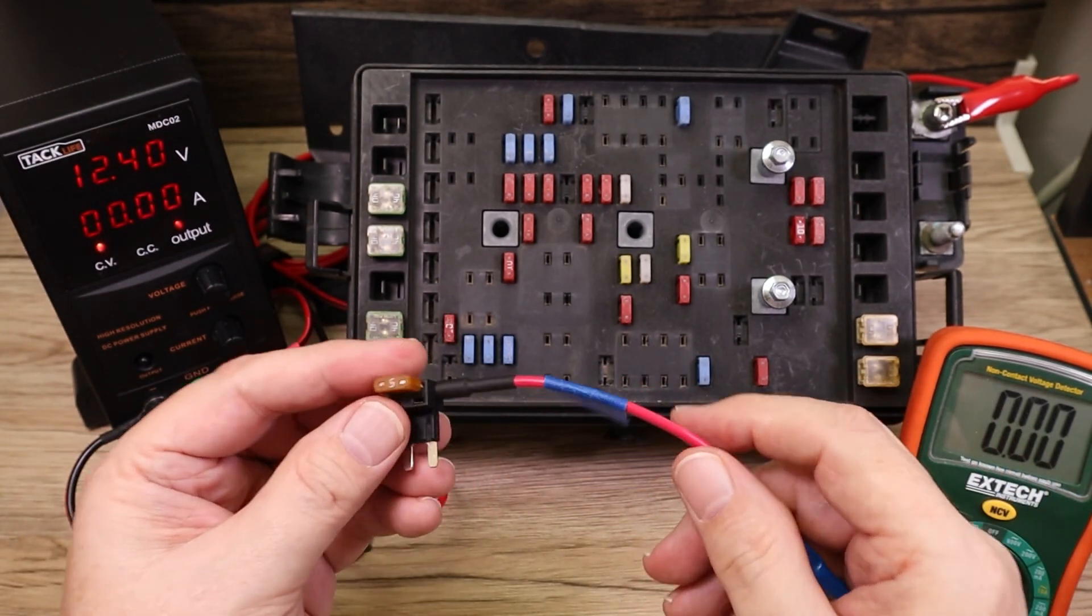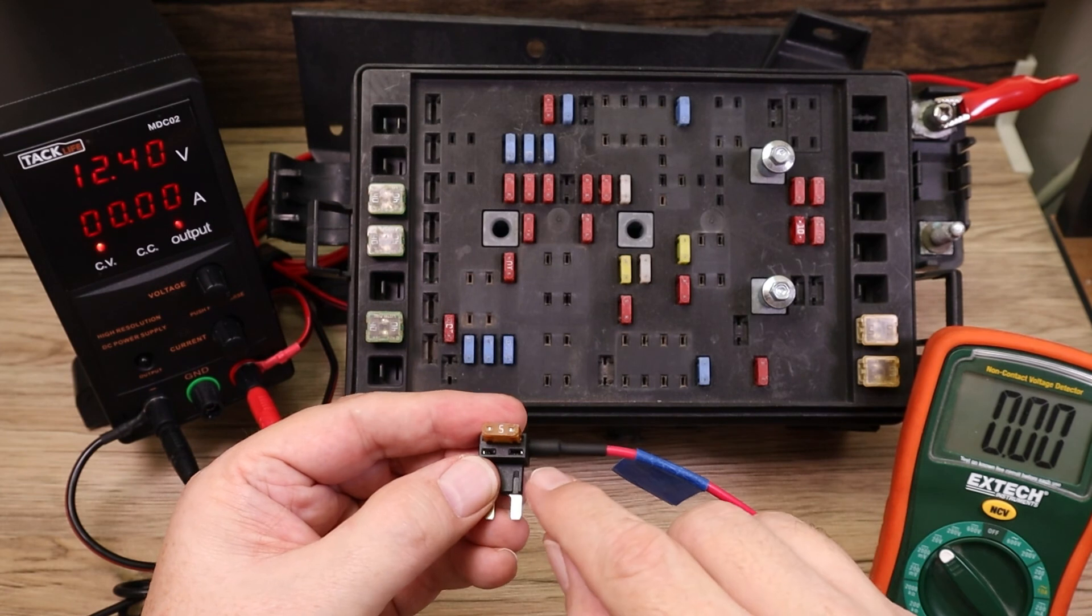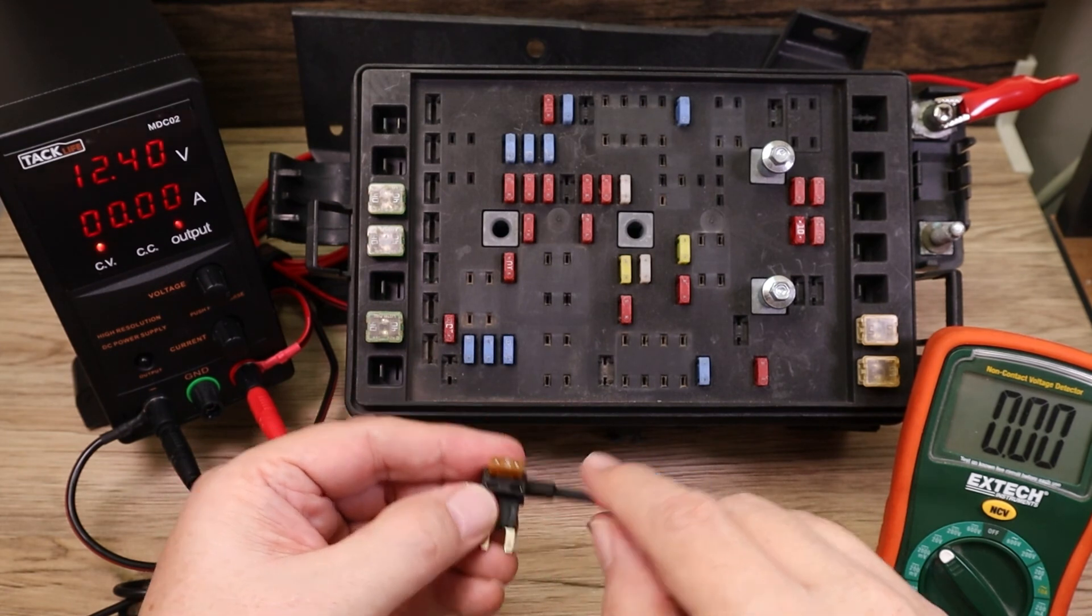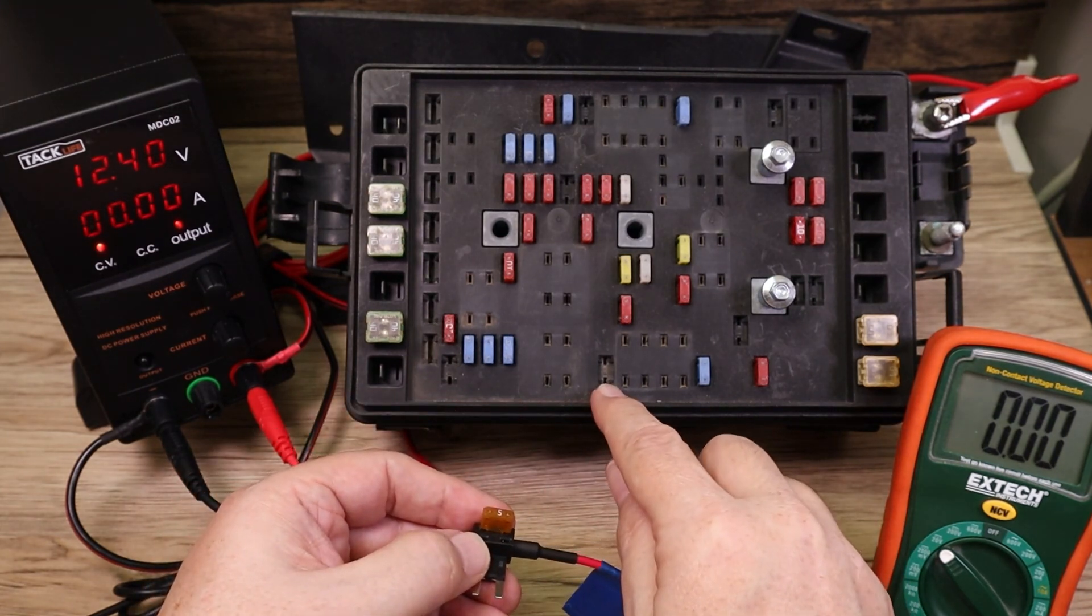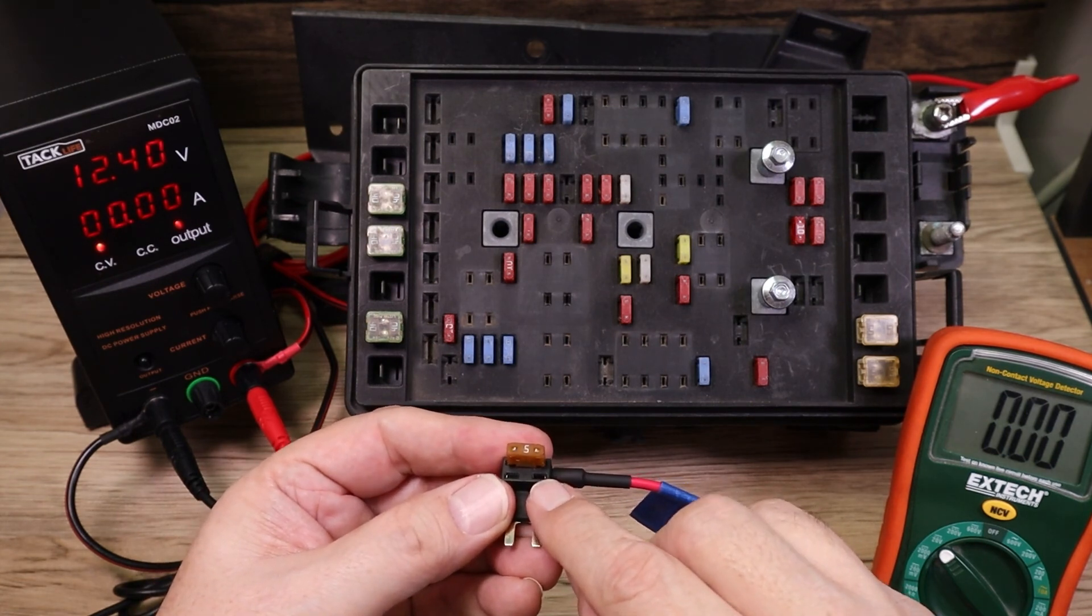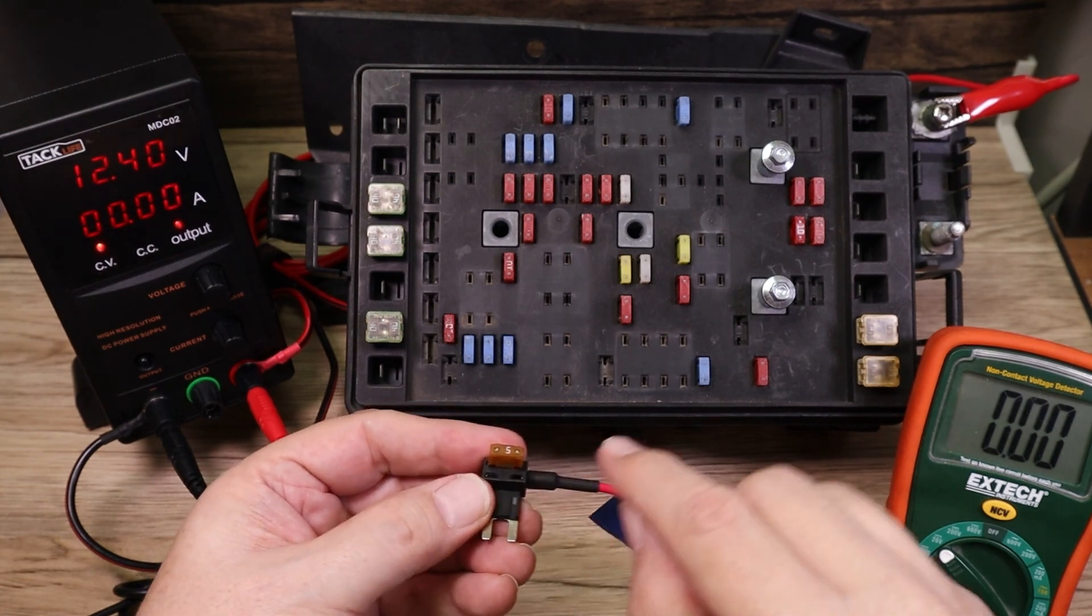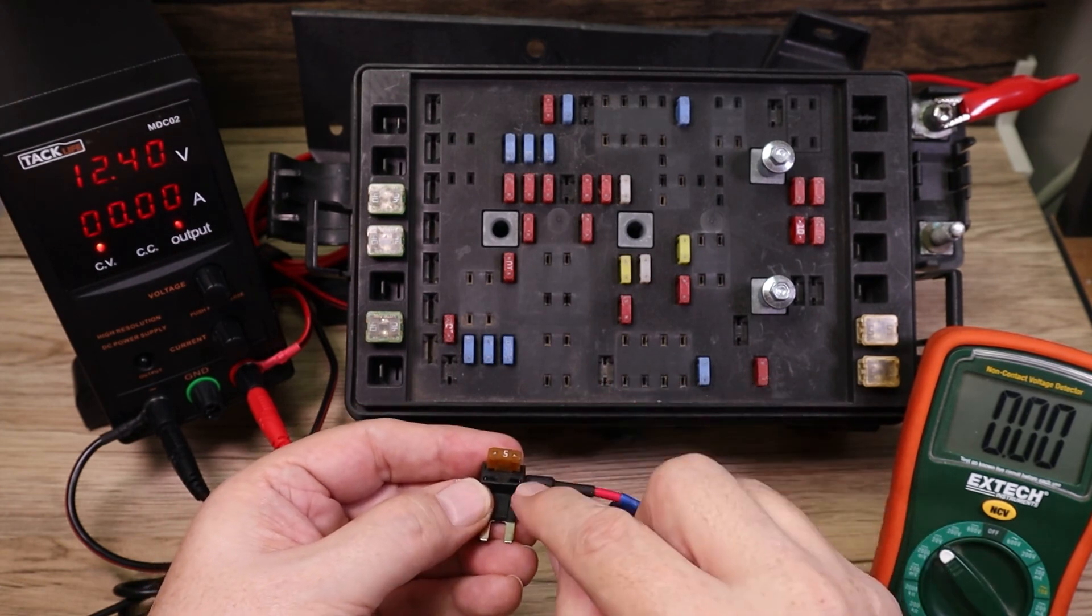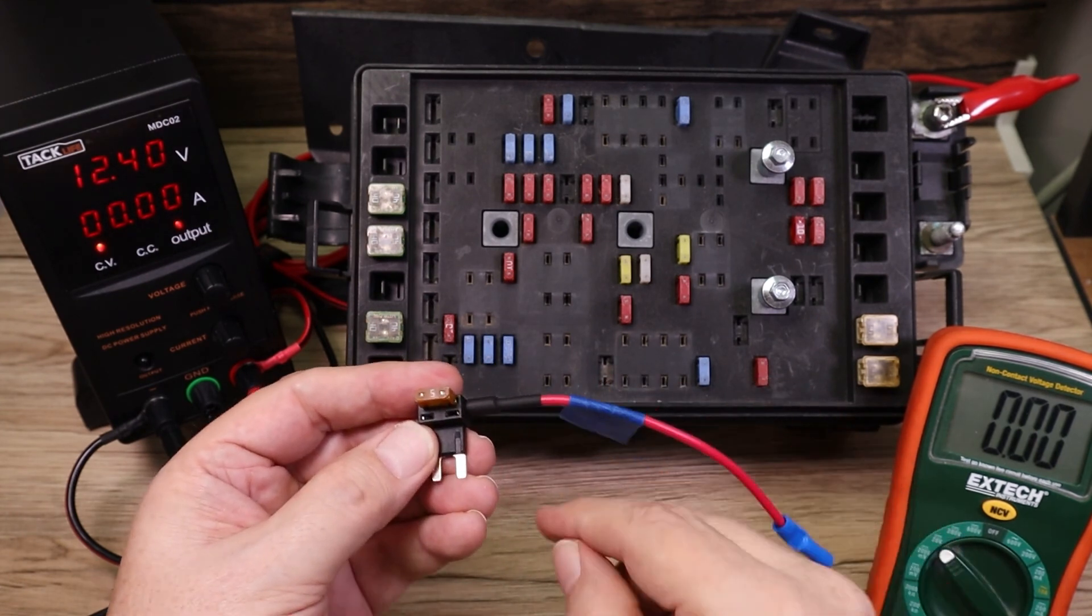That way you are assured that you're not over taxing the original fuse, if any. Again, if the original fuse socket had no fuse, there should never be a fuse in the fuse tab fuse socket on the lower end here. So if there was a fuse, yes. If there was no fuse here originally, no fuse here.